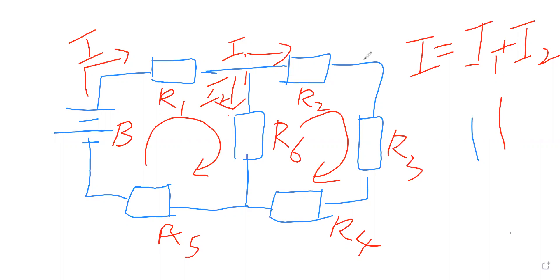From Kirchhoff's voltage law for loop A, I can say that B, which is the voltage of the battery, minus I R1, which is the voltage drop across R1, minus I2 R6, which is the voltage drop across R6,